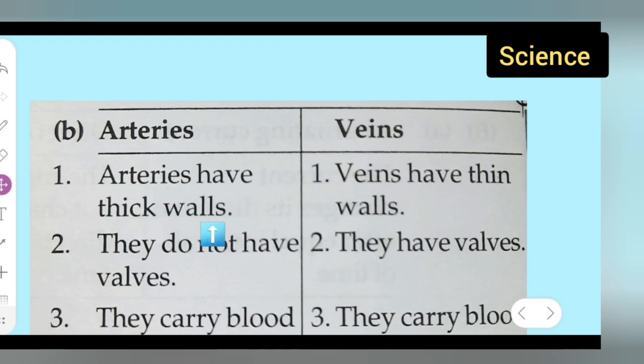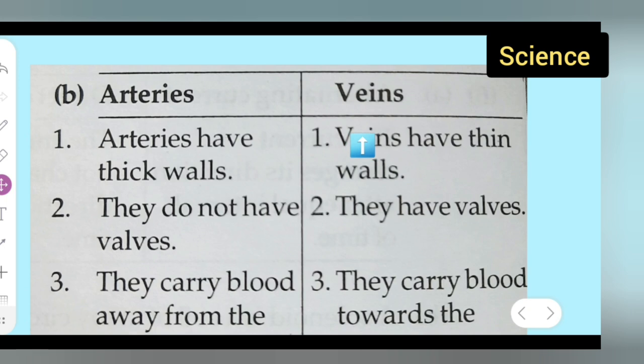Arteries have thick walls, whereas veins have thin walls. Arteries do not have valves, whereas veins have valves.